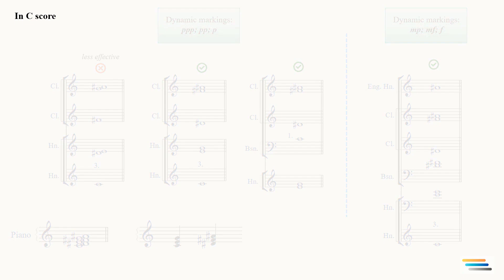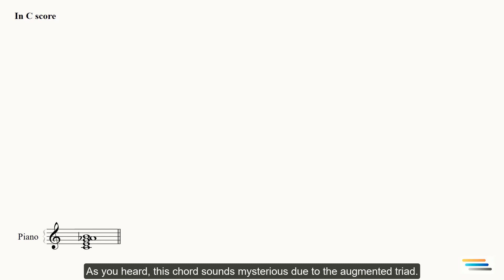The next chord is C major 7 flat 13. As you heard, this chord sounds mysterious due to the augmented triad. Again, we should analyze the construction. If I divide the construction, then I will get two different chords: the C augmented triad and E minor triad.